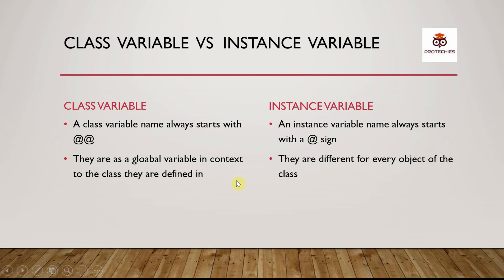The conceptual and logical difference between both of them is: class variables are the global variables in context to the class they are defined in. So, for example, if I define a class and I define a class variable inside that class, I cannot access that class variable inside another class. But I can access that variable inside that particular class anywhere, in any method.